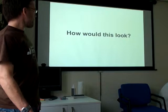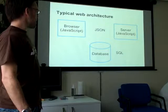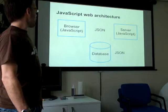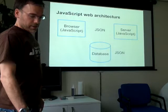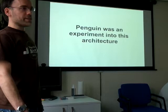Going back to our diagram: we can take the server and switch it to JavaScript. We can take XML and switch it to JSON. We can take SQL and switch it to JSON as well. So we have a JavaScript web architecture - JavaScript everywhere. Penguin was an experiment into this architecture. My project last year was basically exploring these ideas - what would an application look like?